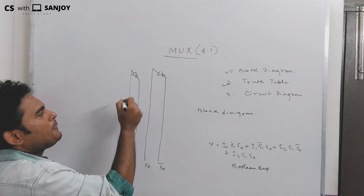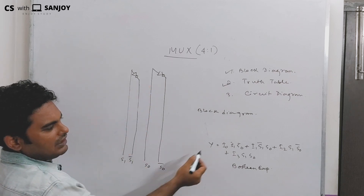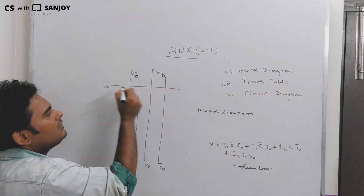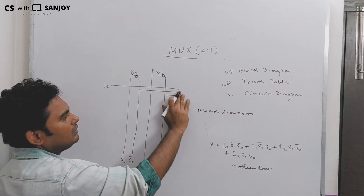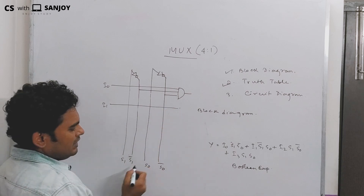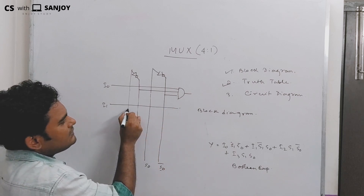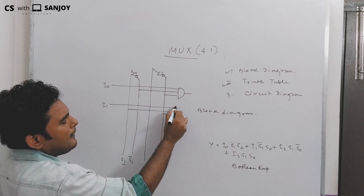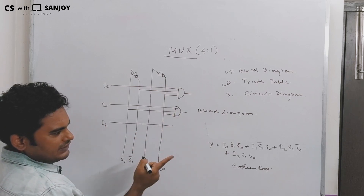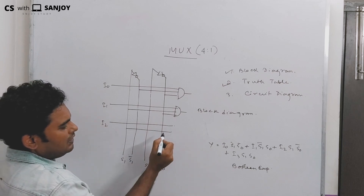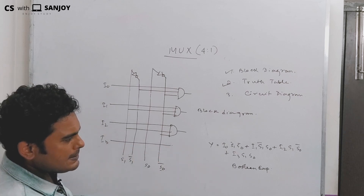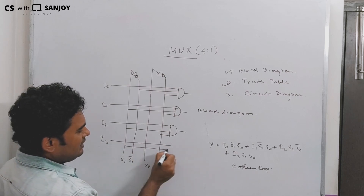So we have S1, S1 bar, S0, and S0 bar. The AND gate inputs are: I0 with S1 bar and S0 bar; I1 with S1 bar and S0; I2 with S1 and S0 bar; I3 with S1 and S0.